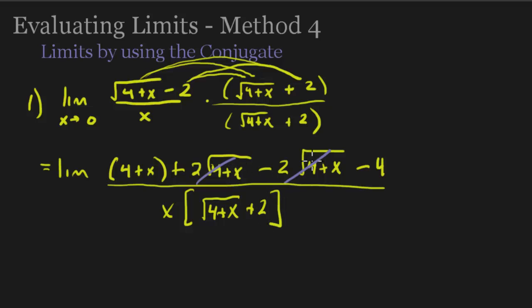Okay. So, let's clean up the top. So we get 4 plus x. These things cancelled, and we get minus 4. On the bottom, we have x with the square root.